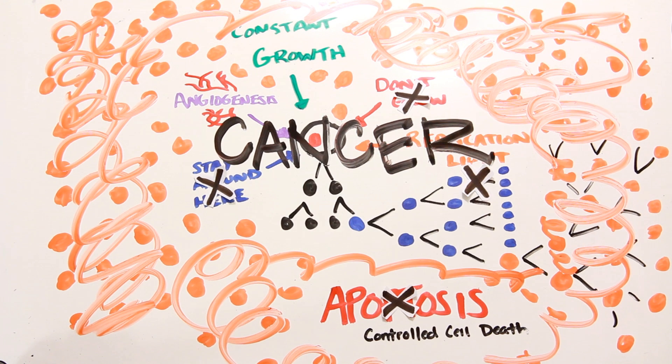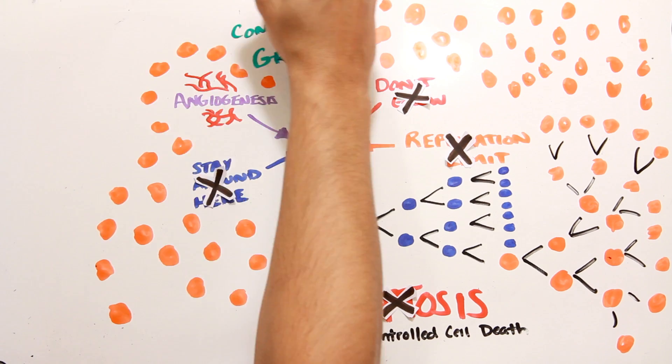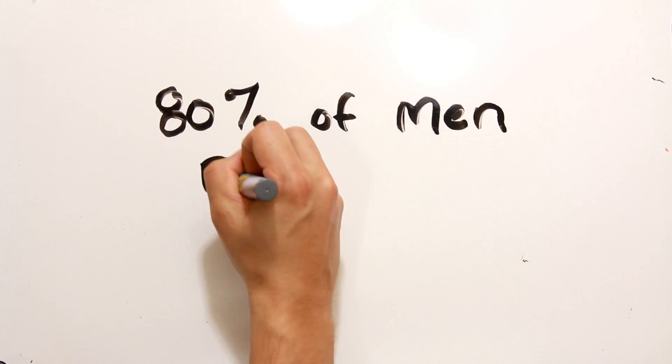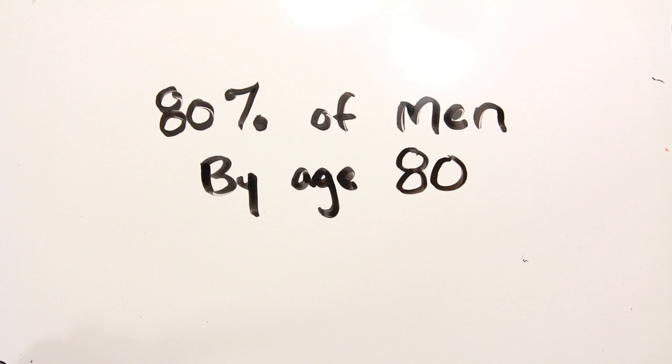Which explains why the older you are, the more likely you are to get prostate cancer, because your cells have had many more chances to pick up multiple mutations through many generations of cells. This is one of the reasons that about 80% of men will get prostate cancer by the time they're 80.